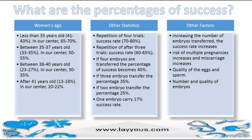Another statistic: after 3 trials the success rate is 60–65%, and after 4 trials, 70–80%. Regarding embryo number transferred: 4 embryos gives 40% success; 3 embryos gives 35%; 2 embryos gives 25%; and 1 embryo carries a 17% success rate. By increasing the number of embryos transferred, the success rate increases, but so does the risk of multiple pregnancies and miscarriage.